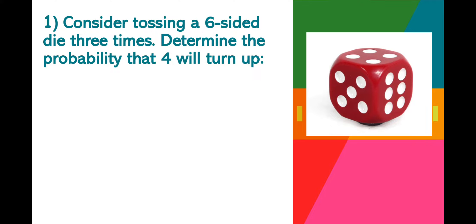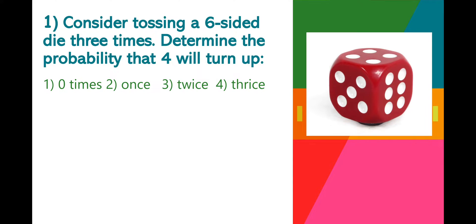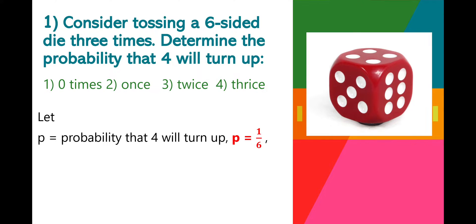Example: Consider tossing a six-sided die three times. Determine the probability that four will turn up: 1) zero times, 2) once, 3) twice, and 4) thrice. We let P be the probability that four will turn up, which is P = 1 over 6, since there is only 1 four out of 6 possible outcomes.